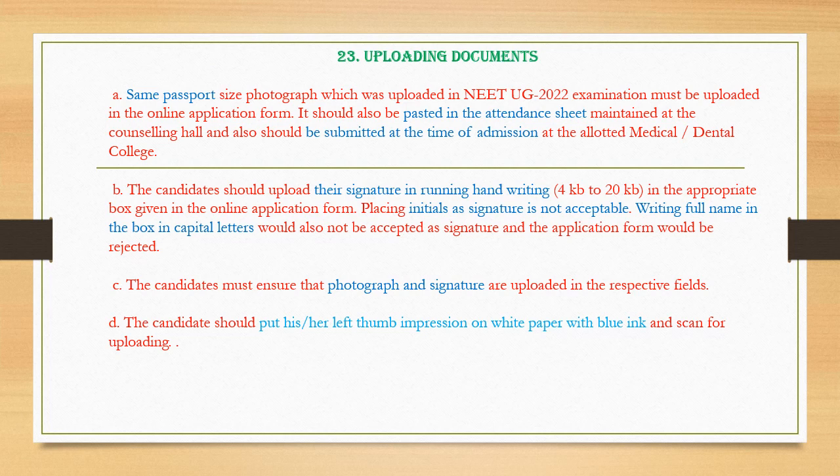The documents to be kept ready for uploading are: a passport size photo — the same one uploaded for NEET UG 2022 — which should be pasted on the attendance sheet and submitted at the allotted medical or dental college. The signature should be in running handwriting; initials and full name in capital letters are not acceptable. Finally, put your left thumb impression on white paper with blue ink and scan it for uploading.